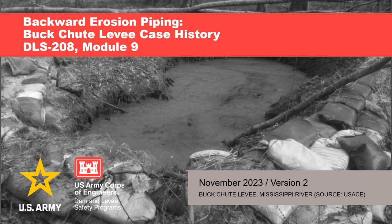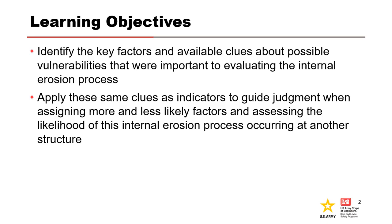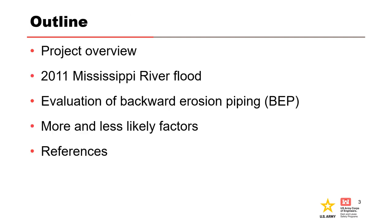This presentation is a case history on backward erosion piping at Buck Chute Levee. We'll begin with an overview of the project, followed by a discussion of the 2011 Mississippi River event that caused widespread flooding. Next, we'll step through a node-by-node evaluation of backward erosion piping at Buck Chute Levee and summarize the factors that made BEP more likely and less likely during the flood event.